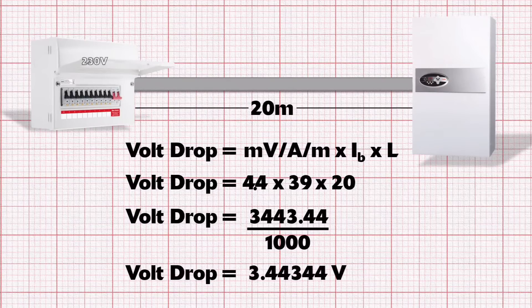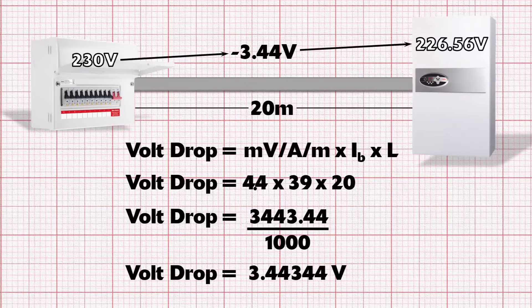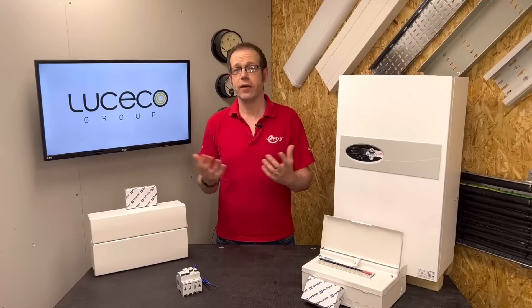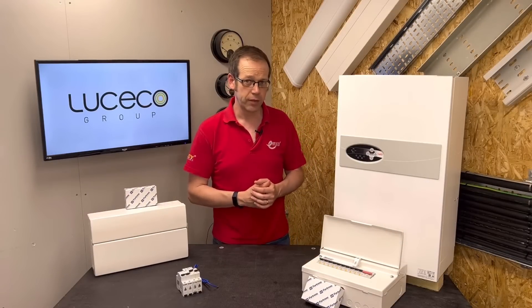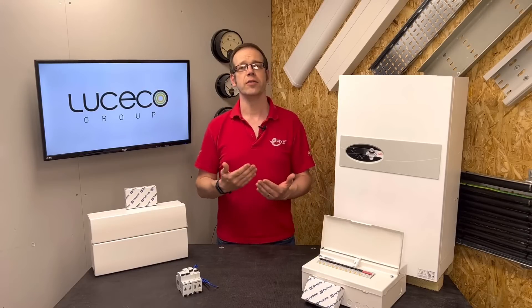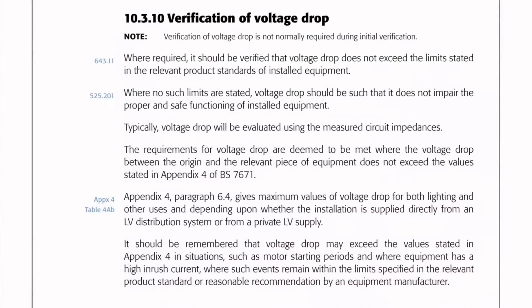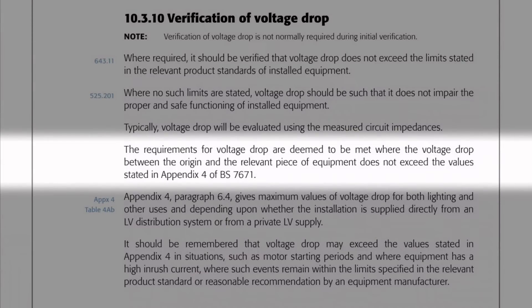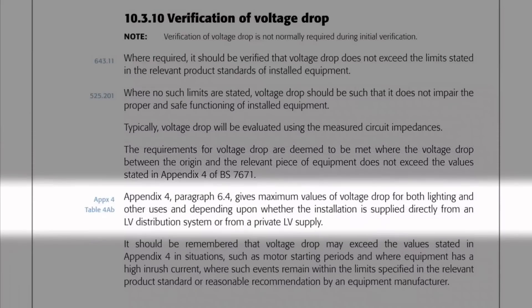So if the voltage at the consumer unit was 230 volts, the voltage at the boiler terminals would be 230 minus 3.44, giving us 226.56 volts. Is this value okay, or will our customer be taking cold showers? There are two ways to figure out if it's acceptable. The first is to use guidance from the IET. Under heading 10.3.10 of the on-site guide, we find information on verifying volt drop. It directs us that the requirements for voltage drop are deemed to be met where the voltage drop between the origin and the relevant piece of equipment does not exceed the value stated in Appendix 4 of BS7671. Appendix 4, paragraph 6.4 gives maximum values of voltage drop for both lighting and other uses, depending on whether the installation is supplied directly from an LV distribution system or from a private LV supply.